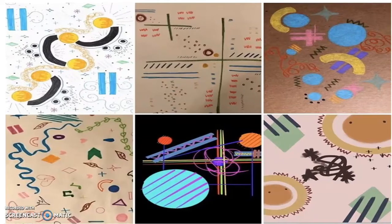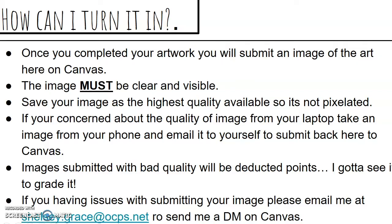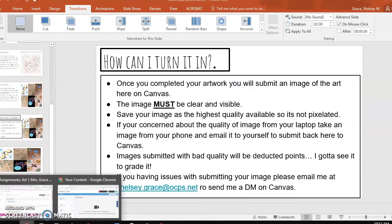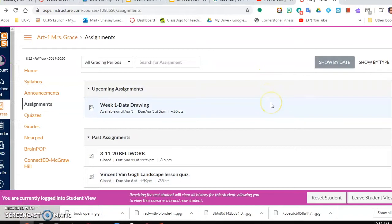Here's a better look at the student example. Now I'm going to show you guys how to turn in your artwork. Once you've completed your artwork, you will submit an image of your artwork on Canvas. The image must be clear and visible. Save your image at the highest quality available so it's not pixelated, and make sure you take a picture in an area with a lot of visible light so it's easily seen. If you're concerned about quality from your laptop, take an image on your phone, email it to yourself, and then submit it to Canvas. Images submitted with bad quality will have points deducted because I can't grade what I can't see. If you have issues submitting your image, please email me or get my attention on Canvas.